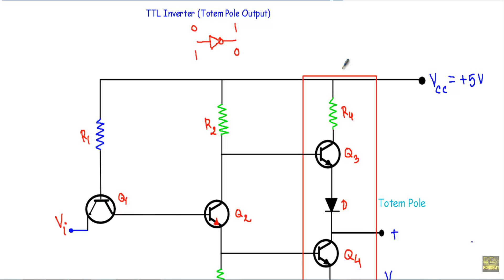In this video, I will show you the operation of our TTL inverter gate. Inverter circuit means if I apply logic zero at the input, I will get logic one at the output. If I apply logic one at the input, I will get logic zero at the output.